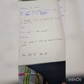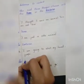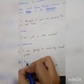Sentence number three is: 'I am going to stick my head out, don't jump.' This sentence is also said by the Tortoise.